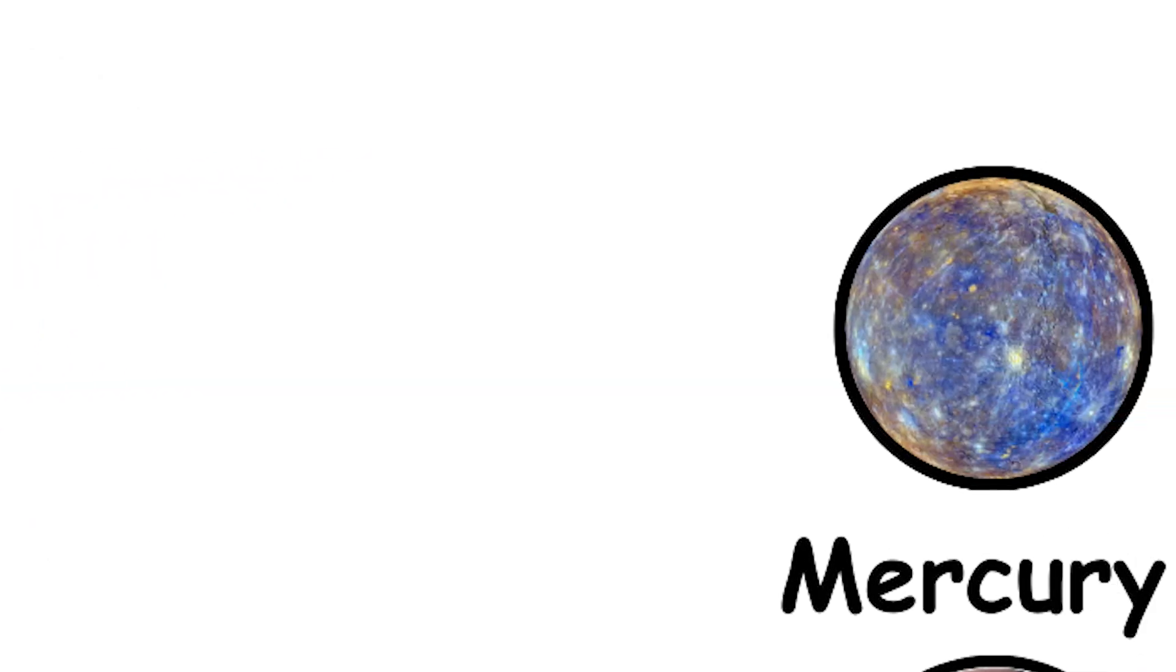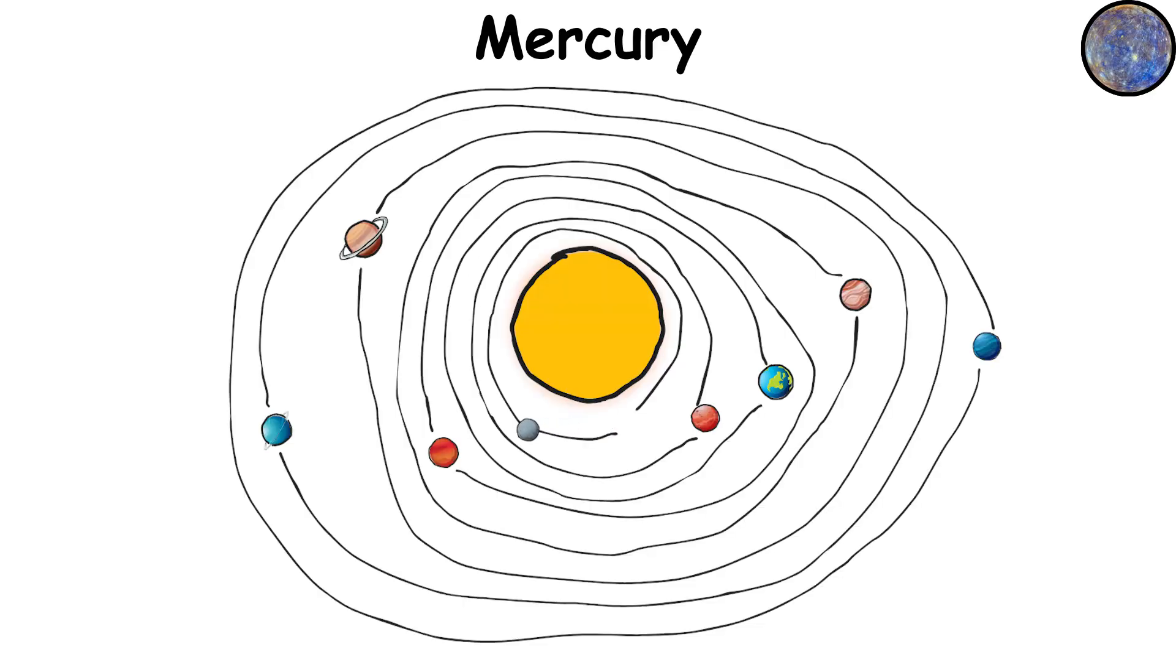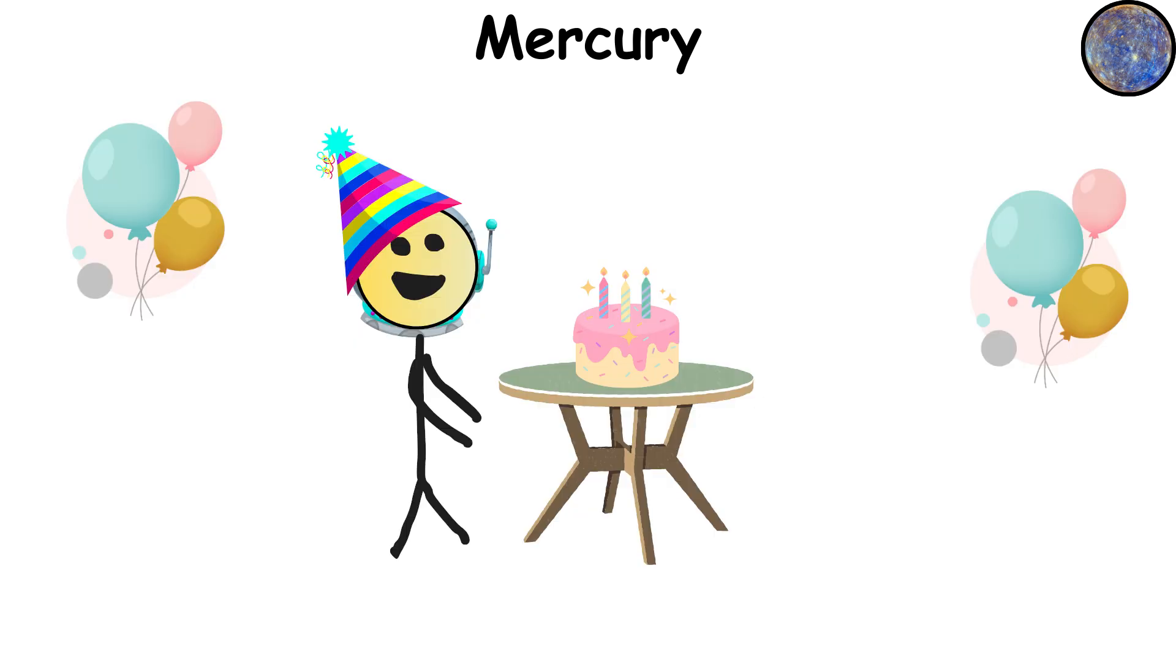Mercury, the speed demon of the solar system. It's the closest planet to the sun and zips around in just 88 days. That's like having your birthday every three months. Talk about aging fast.